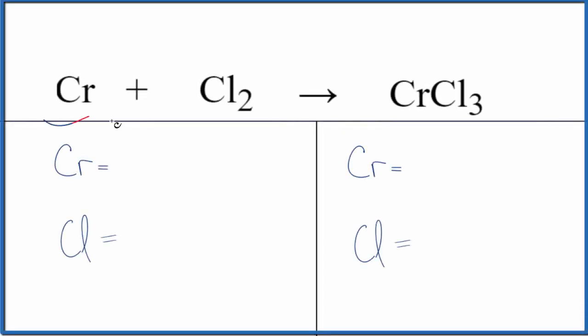Let's balance the equation for Cr plus Cl2 gives us CrCl3. This is chromium, this is chlorine gas, and this is chromium 3 chloride.